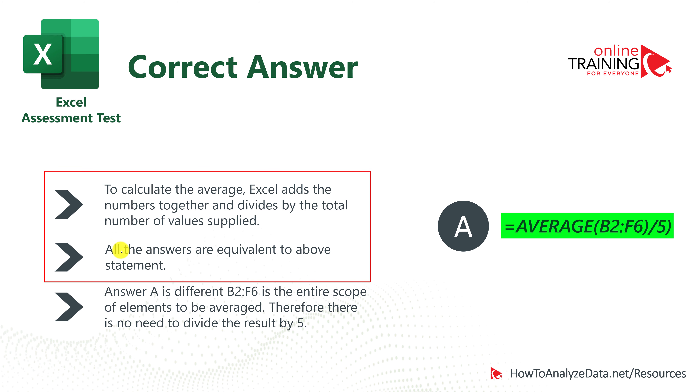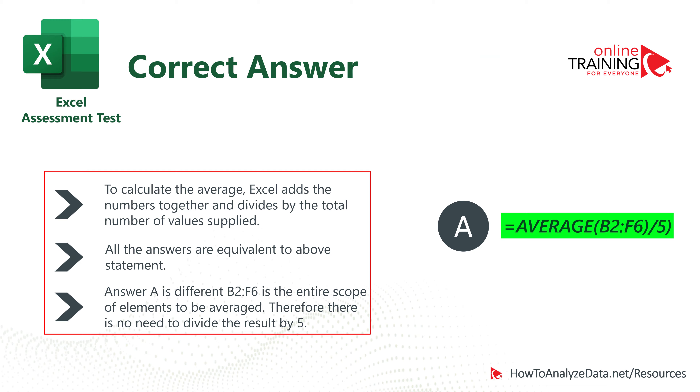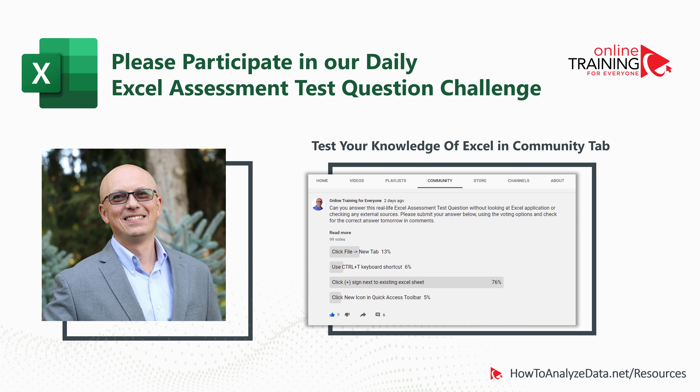To recap: to calculate the average, Excel adds all numbers together and divides by the total number of values. The correct choice is A, because choices B through D are equivalent and calculate the same value, but Choice A calculates approximately one-fifth of the daily average. I'd like to invite you to participate in our daily Excel assessment test challenge — I post a new question every day in the community tab and post the answer in the comments the next day.